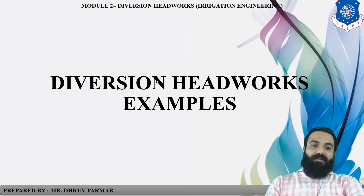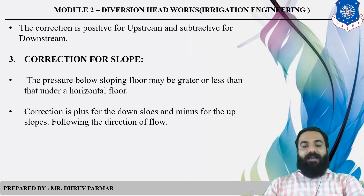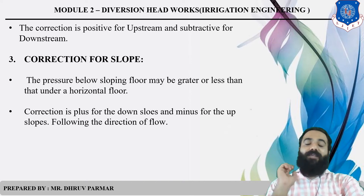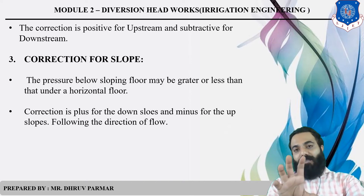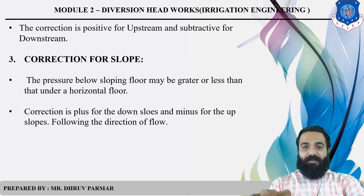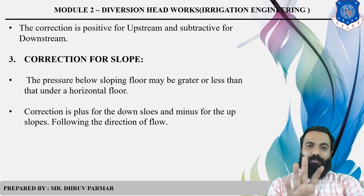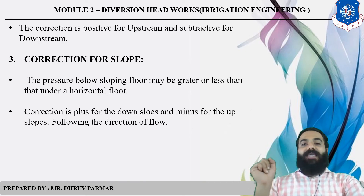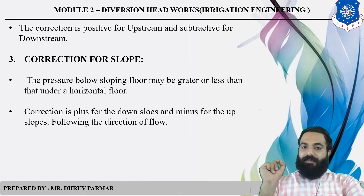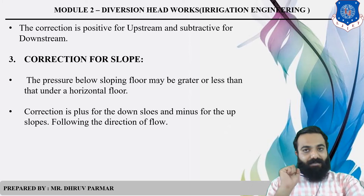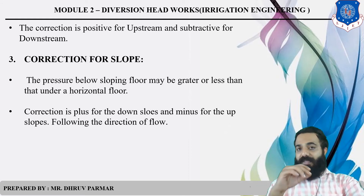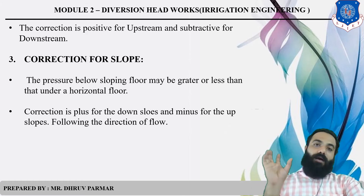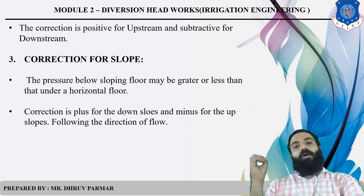These are the corrections required to calculate uplift pressure. First, find alpha, then lambda, then compute the upstream cases to get phi_E, phi_D, and phi_C for upstream, and phi_E and phi_C for downstream. Then apply two corrections: correction due to thickness and correction due to mutual interference of pile. You will then get the final corrected pressure at point E and point C.